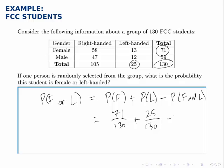The probability that our selected student is female and left-handed is 13 over 130, because there are 13 students in that category.